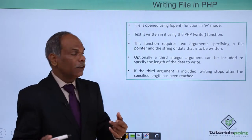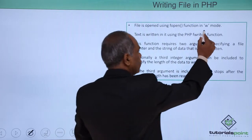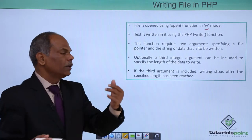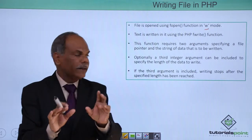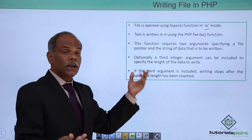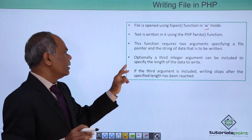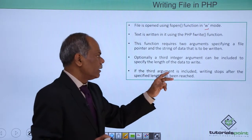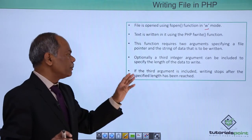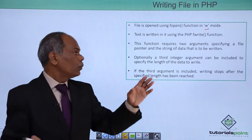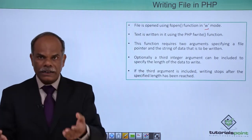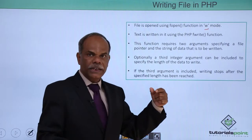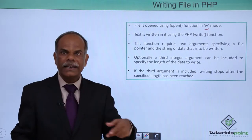Similarly, to write the data into a file, you have to open the file in w mode. In order to write the data, use the fwrite function — it also takes two arguments: the file pointer and the data size to be written. A third integer argument can also be provided to fwrite, which specifies the length of data to write. If the third argument is given, writing will stop when the specified length has been reached. So if you say write 100 bytes and you provide more than 100 bytes, the writing process will stop after 100 bytes.